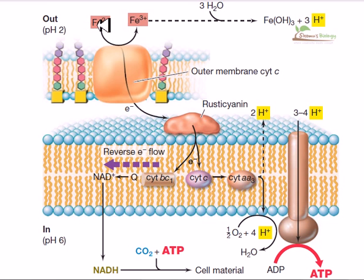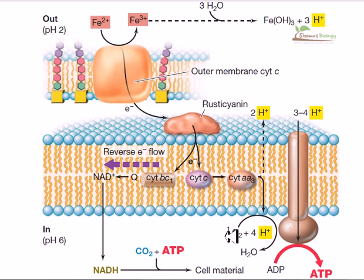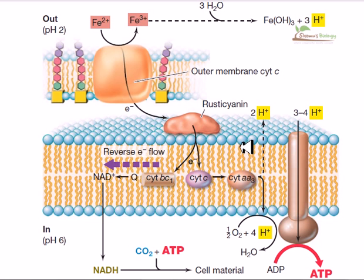Fe2+ transfers one electron to the system and it becomes Fe3+. This electron will flow from one electron carrier to the next through the mobile electron carrier system, and finally reaches the terminal electron acceptor, which is oxygen. This is a non-cyclic process — when it reaches oxygen, oxygen is reduced to produce water. During this electron transport, a proton gradient is made across the membrane.